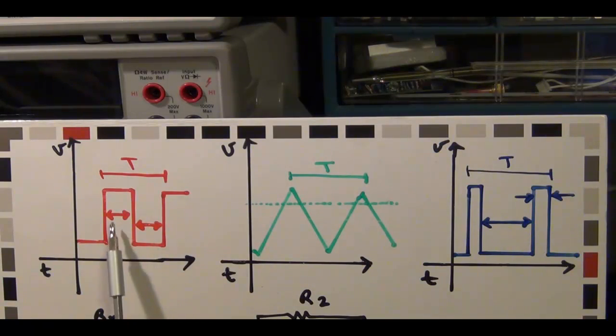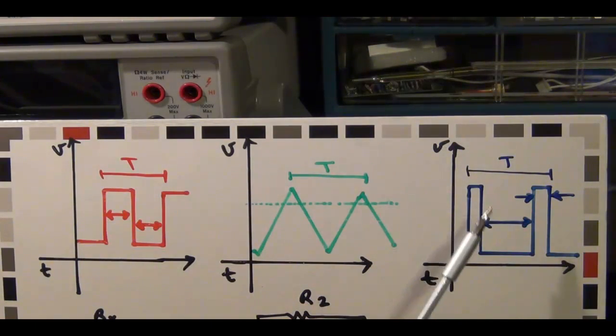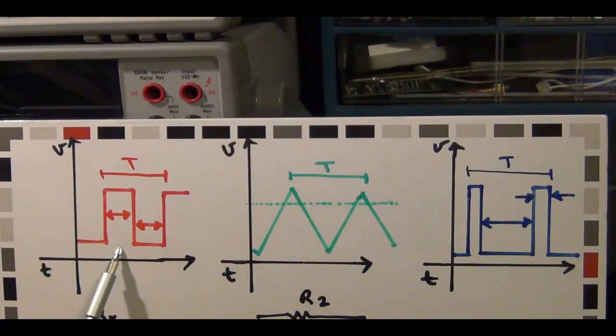So this, by integrating this, I can get this. And by differentiating this, I can get this. So if I want to go this way toward generating a pulse width modulation signal, I first have to generate a square wave, integrate it, get a triangular wave, put it through a comparator with an adjustable threshold, and get a pulse width modulation signal.